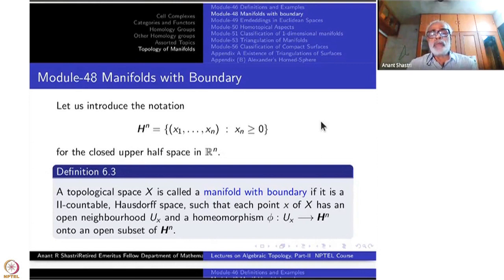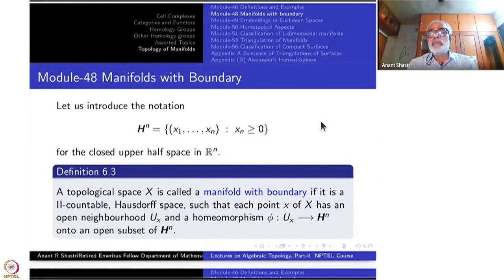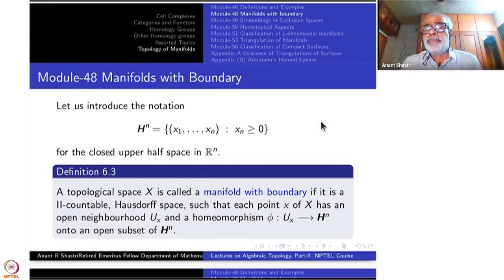A topological space X is called a manifold with boundary if it is second countable and Hausdorff. But now in the atlas, the charts are mapped such that at each point x, we have a neighborhood U_x and a homeomorphism from U_x to an open subset of H^n. So that is the only difference compared to our old definition of a manifold.